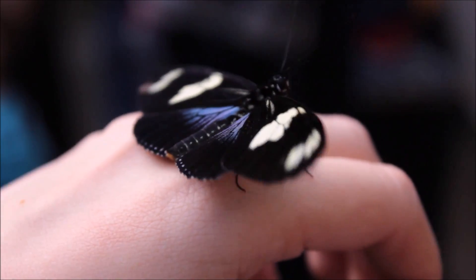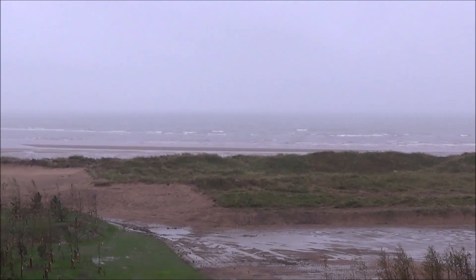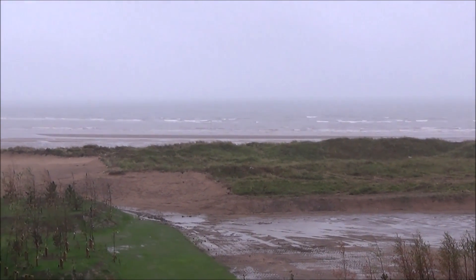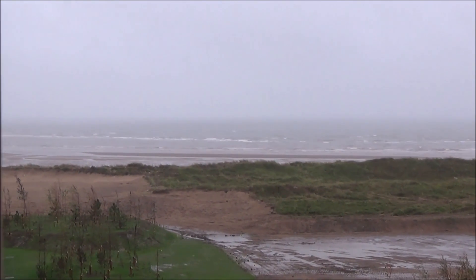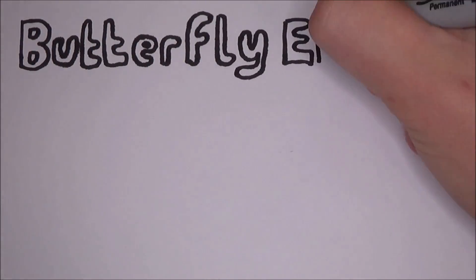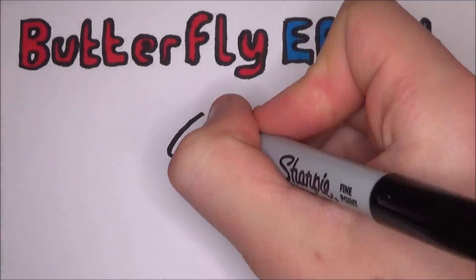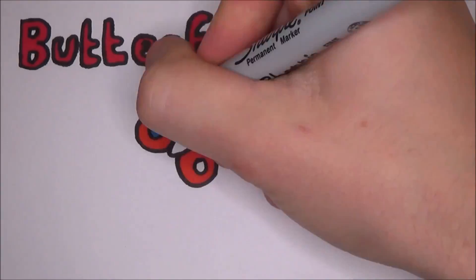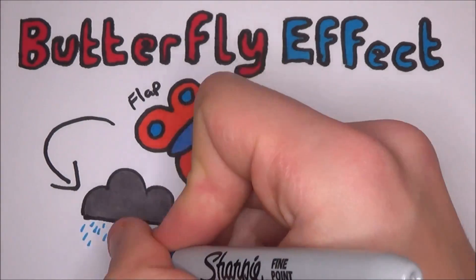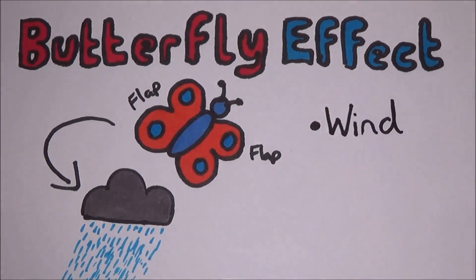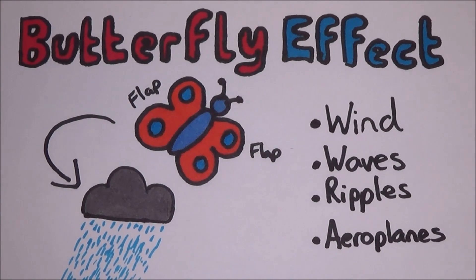We have all heard of a butterfly flapping its wings in one place, let's say Ohio in the USA. Then sometime down the line, let's say in Wales, the UK, a horrid storm breaks out. This is called the butterfly effect and it is one of the most common systems in chaos theory. However, the actual notion of a butterfly flapping its wings and creating a storm isn't as realistic as you might hope. All the other factors such as the wind, waves, ripples, even aeroplanes would have a larger impact on the weather than a butterfly would.